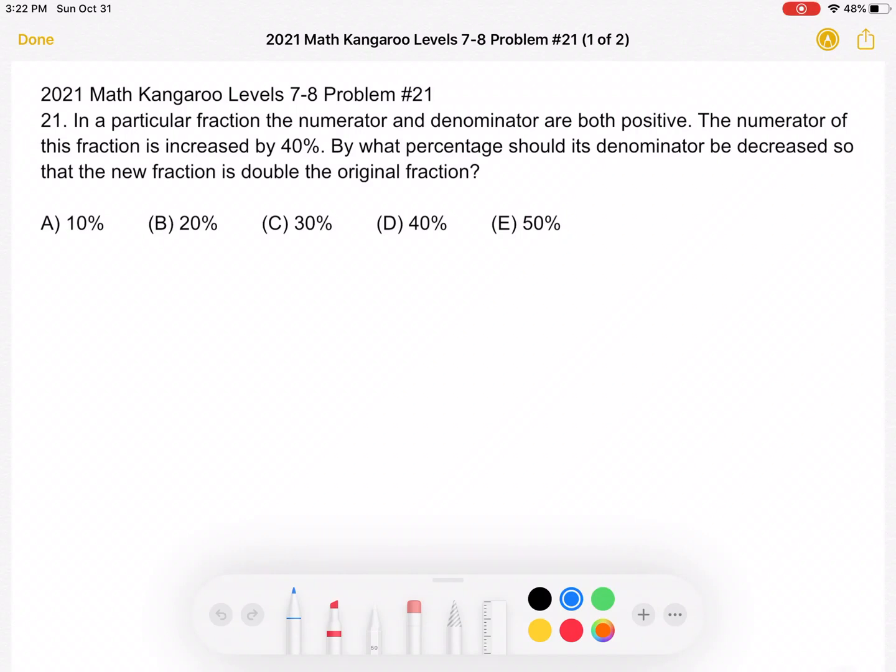This is the 2021 Math Kangaroo Level 7-8 Problem Number 21. In a particular fraction, the numerator and denominator are both positive. The numerator of this fraction is increased by 40%. By what percentage should its denominator be increased so that the new fraction is double the original fraction?